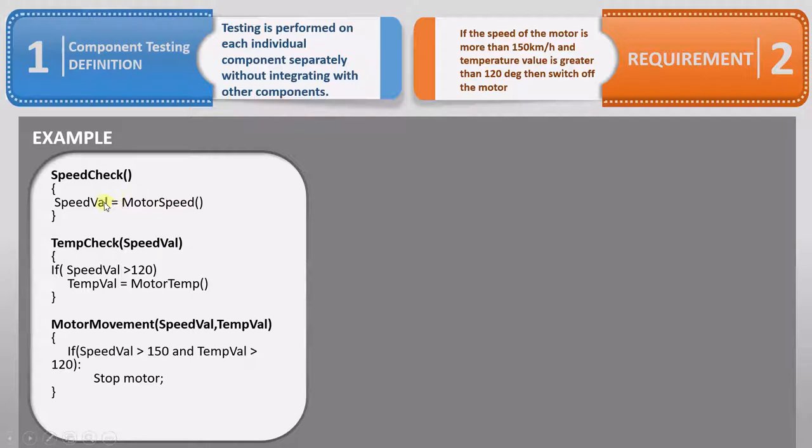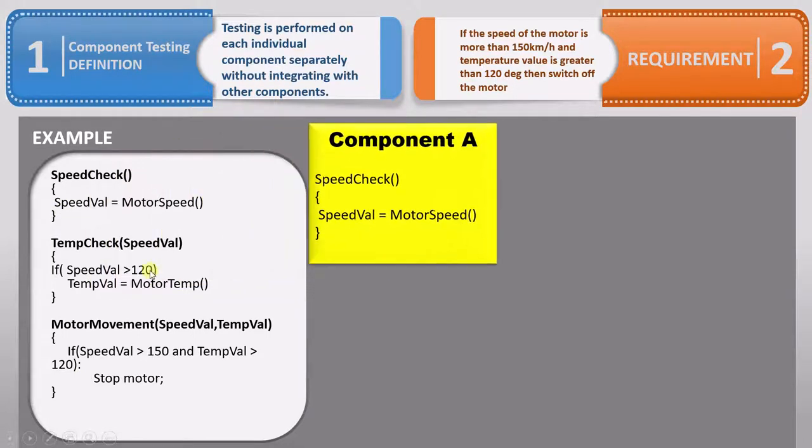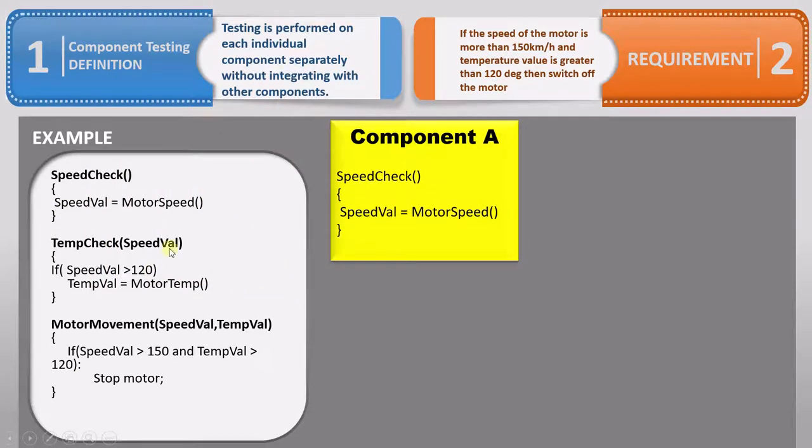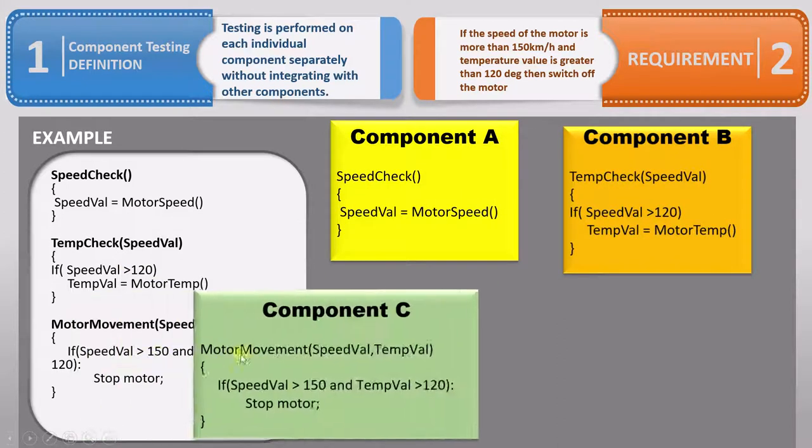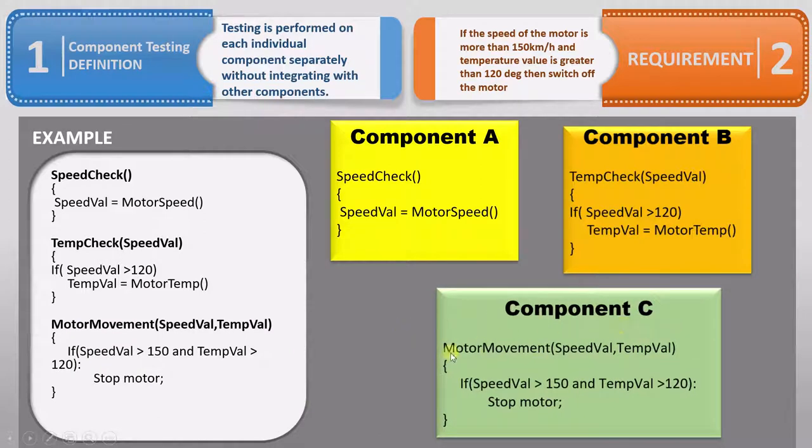Now, if we were to perform component testing on this code, we would have to separate each component. This would be component A, where we only test the motor speed. The second function is component B, where we only test the temperature value. And the third function is component C, where we test the motor movement.